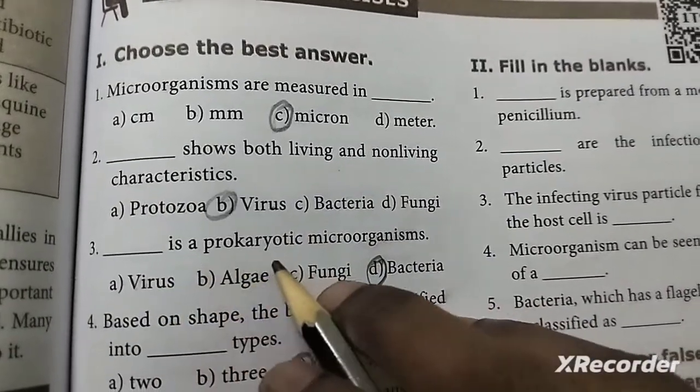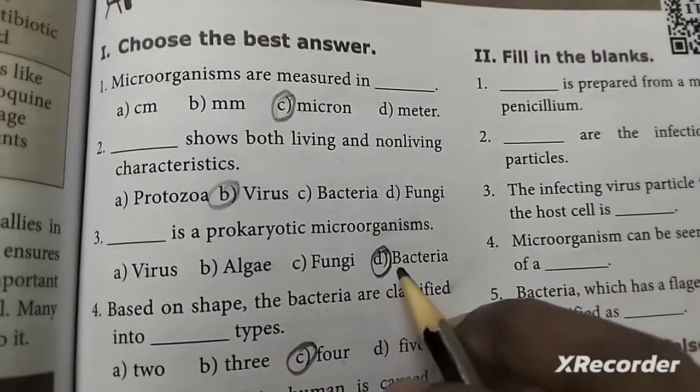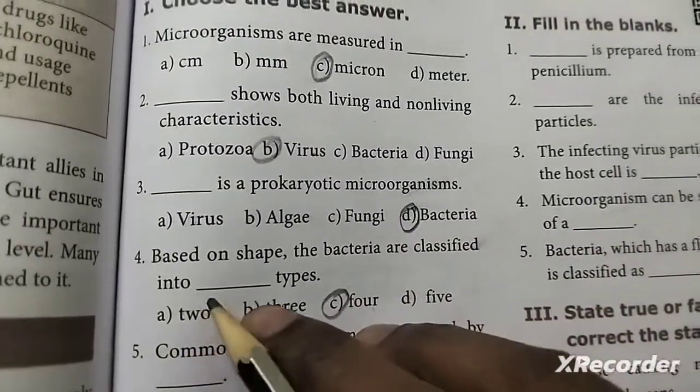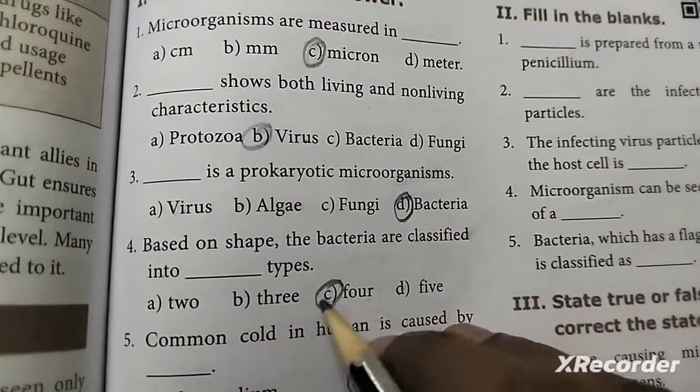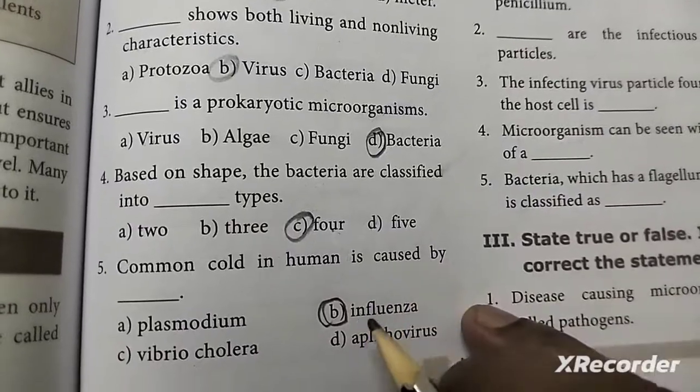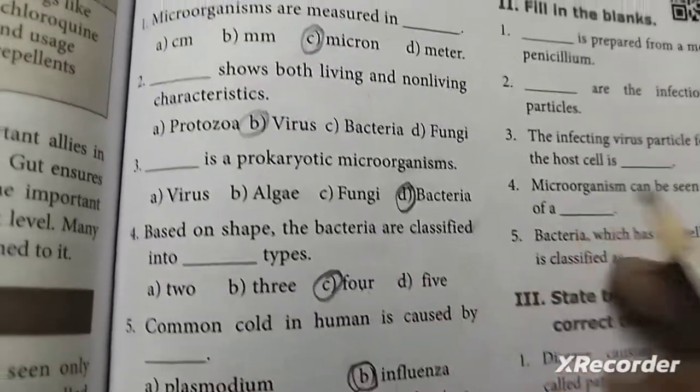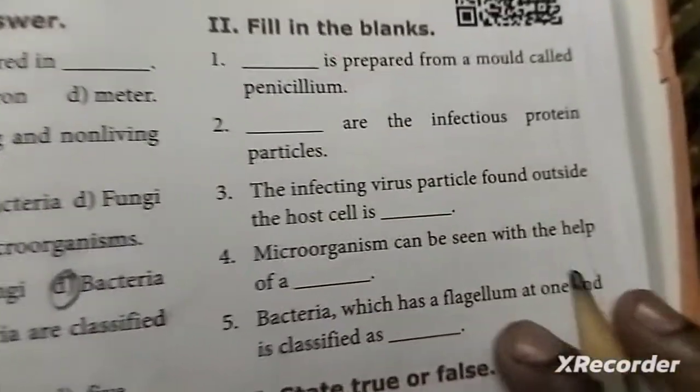Third one: is a prokaryotic microorganism - bacteria. Fourth one: based on shape, bacteria are classified into four types. Fifth one: common cold in human is caused by influenza. This is the fifth choose the best answer.